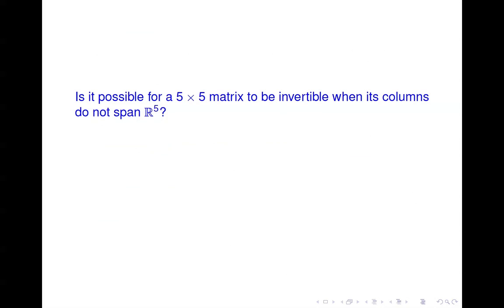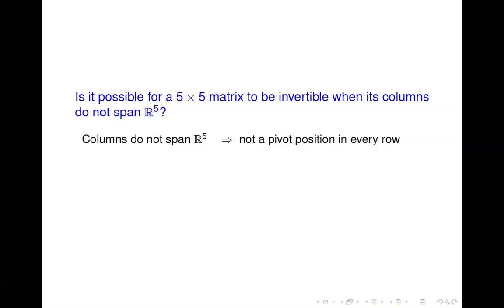Here are some even-numbered problems to illustrate the logic. First: is it possible for a five-by-five matrix to be invertible when its columns do not span R^5? If the columns don't span R^5, there's not a pivot position in every row, which means the matrix is not row equivalent to the identity matrix, or equivalently there are fewer than five pivot positions. Therefore, the matrix cannot be invertible.